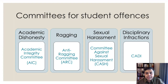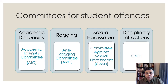Broadly speaking, we can think of four broad types of student offenses, and there's a university-level committee to deal with each one of these. First, we may have academic dishonesty of various sorts — cheating on exams, plagiarism, that sort of thing. All of those fall under the ambit of the Academic Integrity Committee.